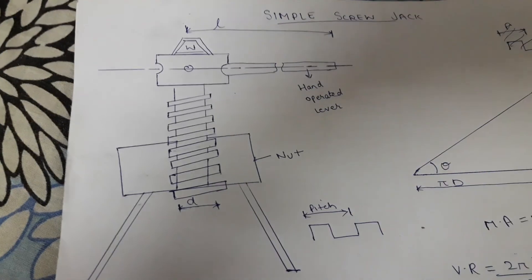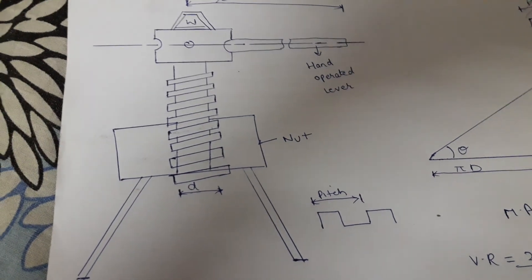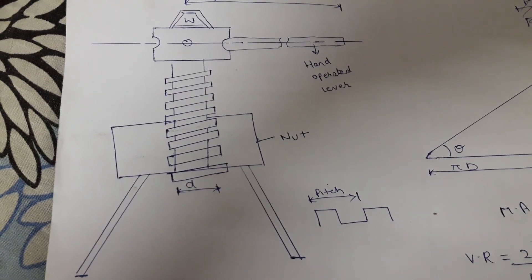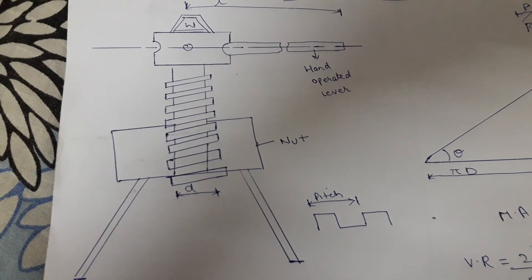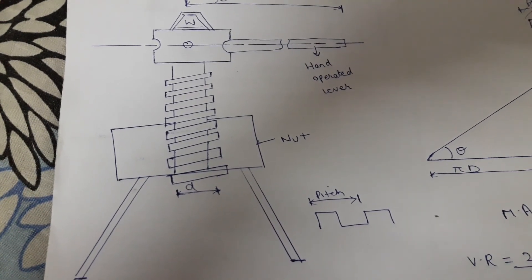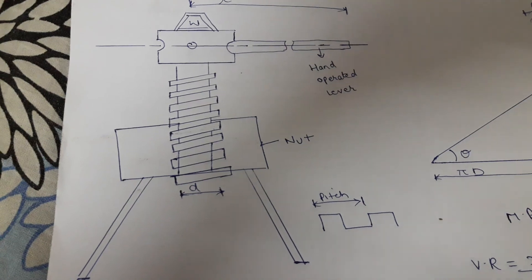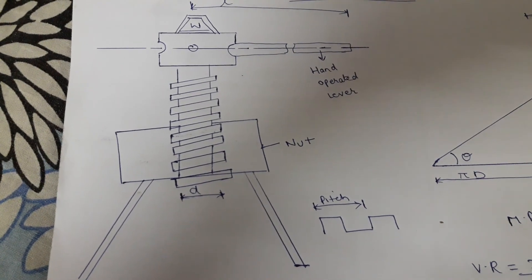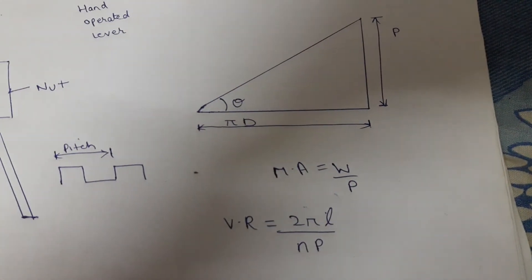So if the square threaded screw is of single start, the distance moved by the load is equal to pitch. If your square threaded screw is of double start, the distance moved by the load is equal to two into pitch. So as it all depends upon the square threaded screw that it is of single start or it is of multi start. So now how to find out the mechanical advantage and velocity ratio.